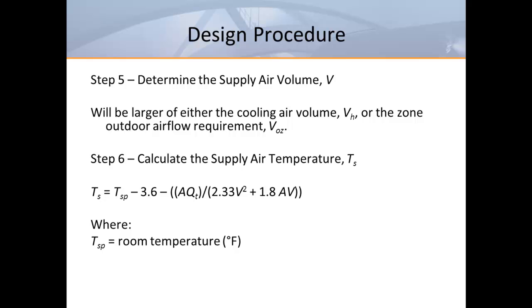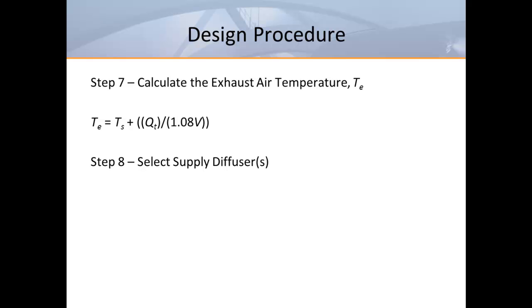Next we can calculate the supply air temperature needed to meet our room temperature set point. Once we know our supply air temperature, we can easily calculate our exhaust air temperature. Now it's time to make our diffuser selections. I went through this design procedure mainly to reinforce and apply the theory covered earlier. Most engineers don't have the time to go through an exercise like this, which is why most manufacturers offer product selection software to simplify the process and save valuable time.